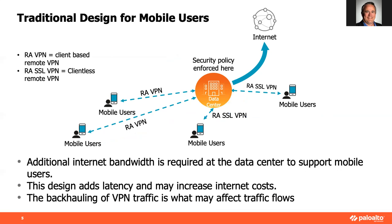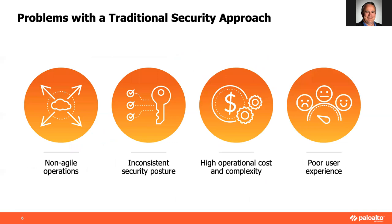What you ended up with in both cases was big, bulky, slow-moving, hard-to-change operations — non-agile, requiring equipment purchase, shipping, racking, stacking, and setup. You end up with an inconsistent security posture: one vendor doing security for mobile users, another for branch office users, another at the data center — one vendor doing antivirus, another doing endpoint security. It's expensive, with high operational cost and complexity.